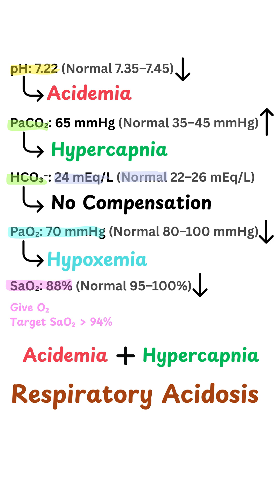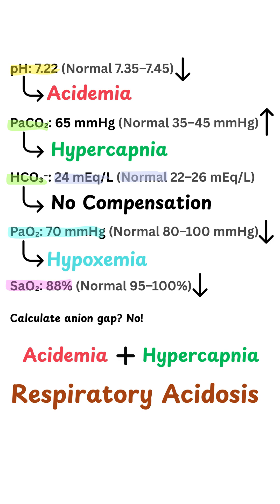Now let's move on to step five: the anion gap. Do we need to calculate that? No, we don't — because we only do that if we have metabolic acidosis.